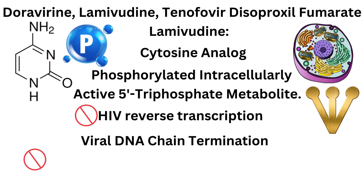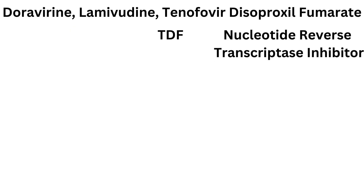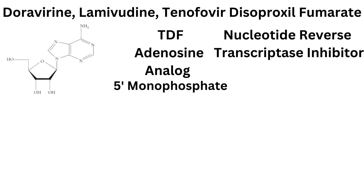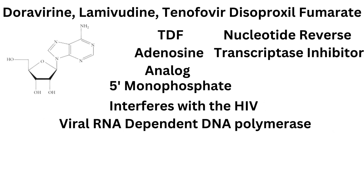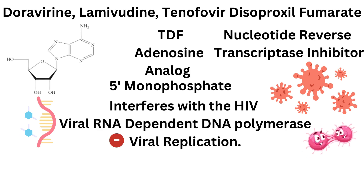This leads to inhibition of RNA and DNA-dependent DNA polymerase activities of reverse transcriptase. Tenafavir Disoproxyl Fumarate is a nucleotide reverse transcriptase inhibitor, analogue of adenosine-5 monophosphate, that interferes with the HIV viral RNA-dependent DNA polymerase, resulting in inhibition of viral replication.